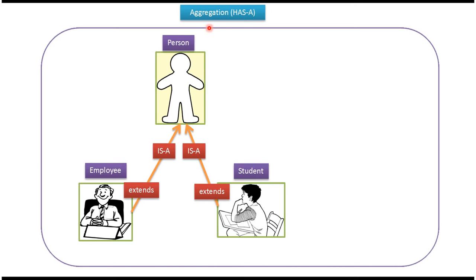Hi, in this video tutorial I will cover aggregation, or the has-a relationship. Employee extends Person, so employee is a person and employee inherits all properties and methods from Person. Like that, Student extends Person, so student is a person and student inherits all properties and methods from Person.